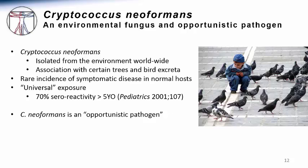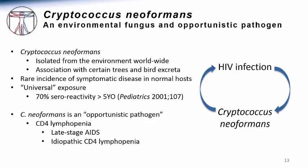Sero-epidemiology studies show that more than 70% of five-year-olds in the metropolitan New York City area have evidence of exposure to this infection. Cryptococcus neoformans is a true opportunistic pathogen. We are all exposed to this infection; we become colonized or infected with the organism, but our body knows how to deal with it. We only show symptomatic disease in the setting of immunosuppression — specifically those forms associated with CD4 lymphopenia.